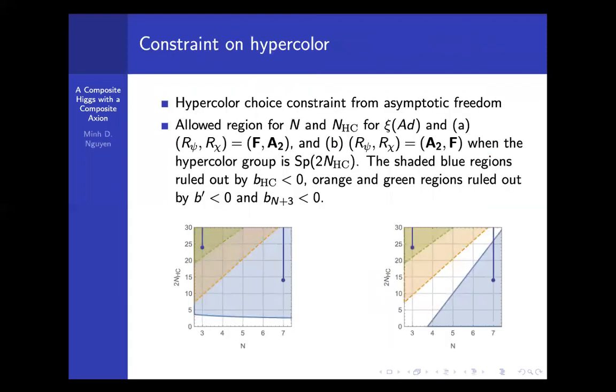This new embedding can actually constrain the choice of hypercolor from the asymptotic freedom. The hypercolor has to be asymptotically free, and also the SU(N+3), and also the enlarged color.